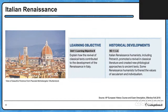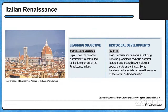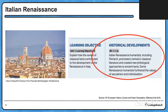We're starting in those cobblestone streets of Florence. Take a look at the beautiful picture of Florence on the screen as we move into the historical development on the right. Italian Renaissance humanists, including Petrarch, promoted a revival in classical literature and created new philological approaches to ancient texts. Some Renaissance humanists furthered the values of secularism and individualism.